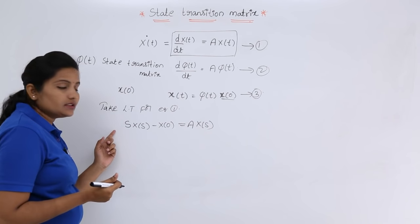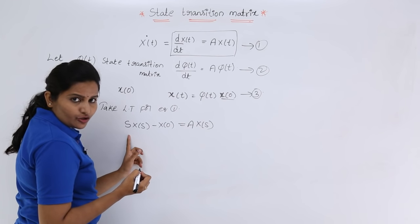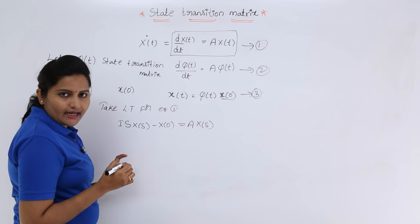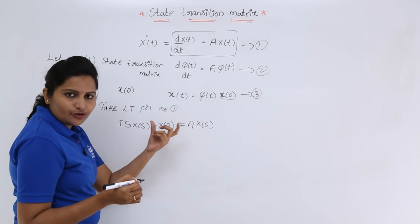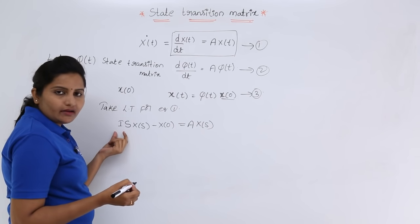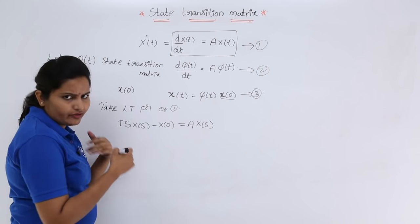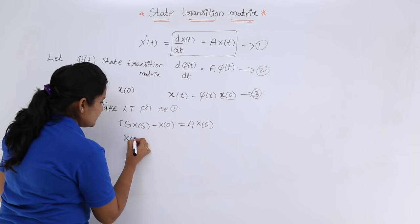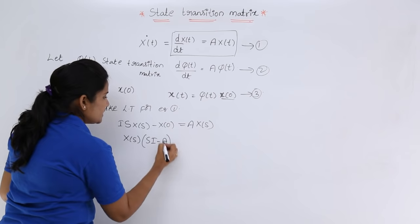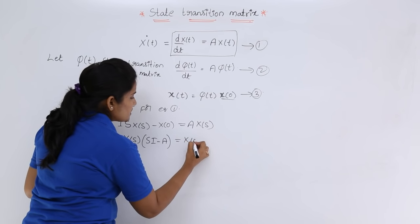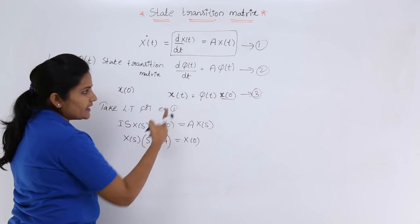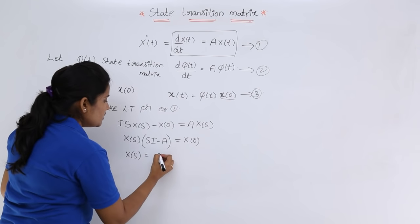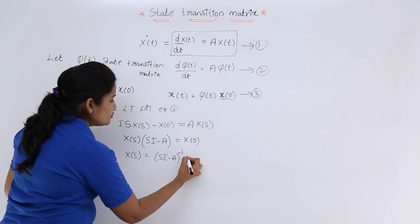Since s must be in matrix form, we write s·I, where I is the identity matrix (multiplying by I gives the same result). Rearranging, we collect the X(s) terms: X(s)·(sI − A) = x(0), and therefore X(s) = (sI − A)⁻¹·x(0).